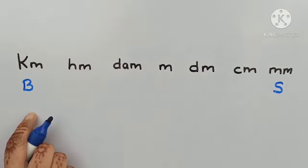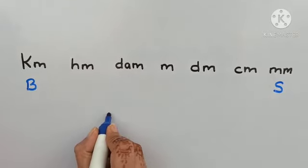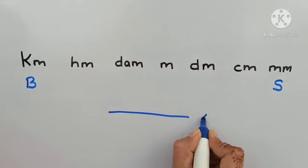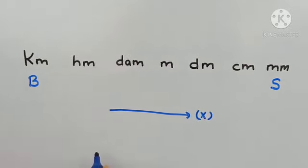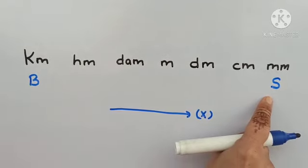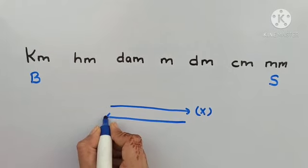So, whenever we have to convert bigger to smaller unit, we have to do the multiplication. And whenever we have to convert from smaller unit to bigger unit, we have to do the division.